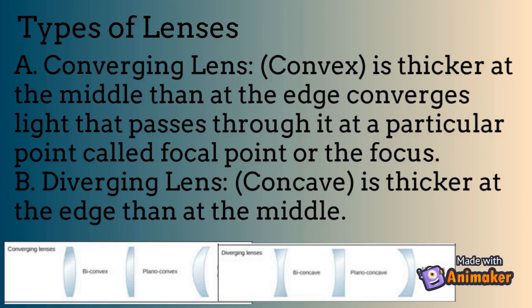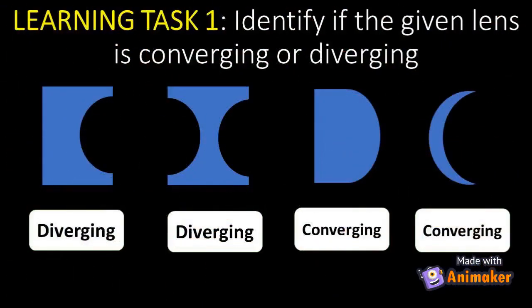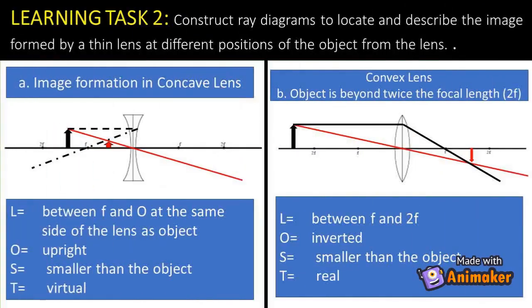Let's watch a video in order to apply the rules in locating and identifying images formed by the lens. Learning task one: identify if the given lens is converging or diverging. Learning task two: construct ray diagrams to locate and describe the image formed by a lens at different positions of the object from the lens.